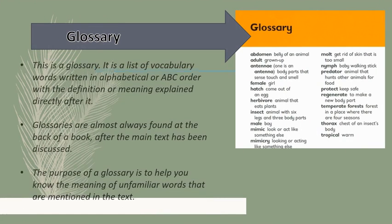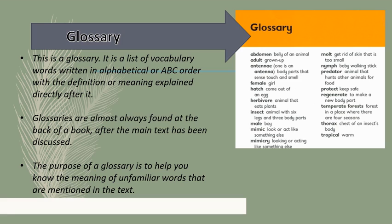Glossary: this is a glossary. It is a list of vocabulary words written in alphabetical order with the definition or meaning explained directly after it. Glossaries are almost always found at the back of a book after the main text. The purpose of a glossary is to help you know the meaning of unfamiliar words mentioned in the text.